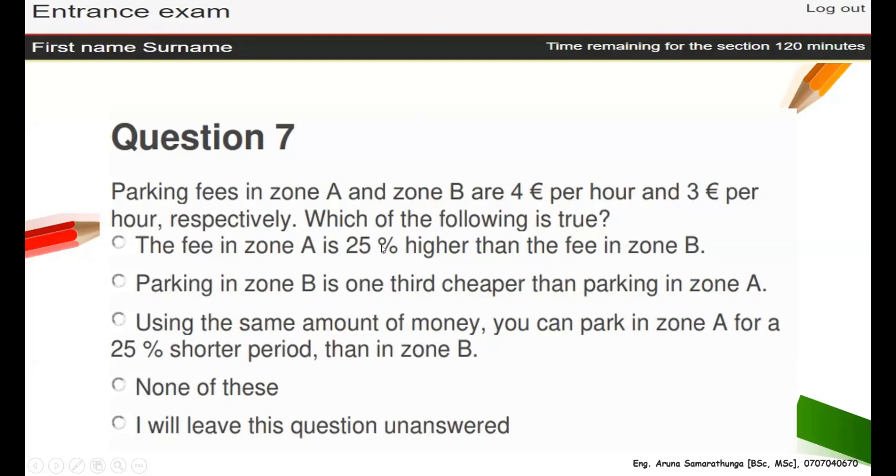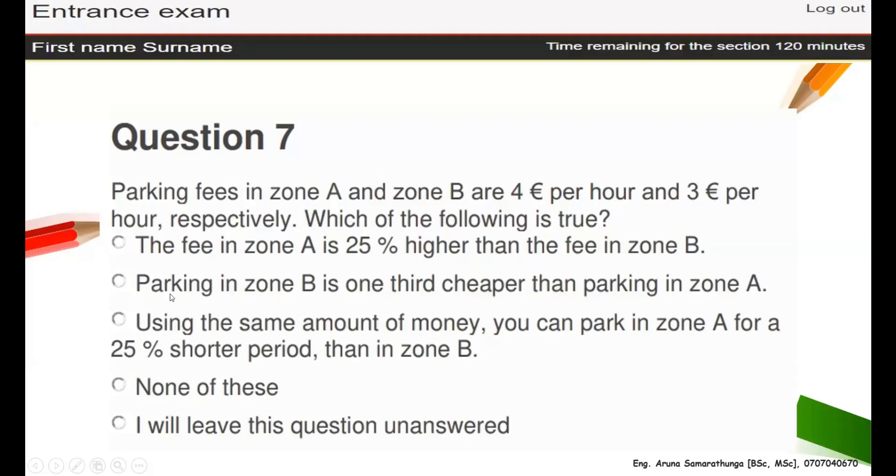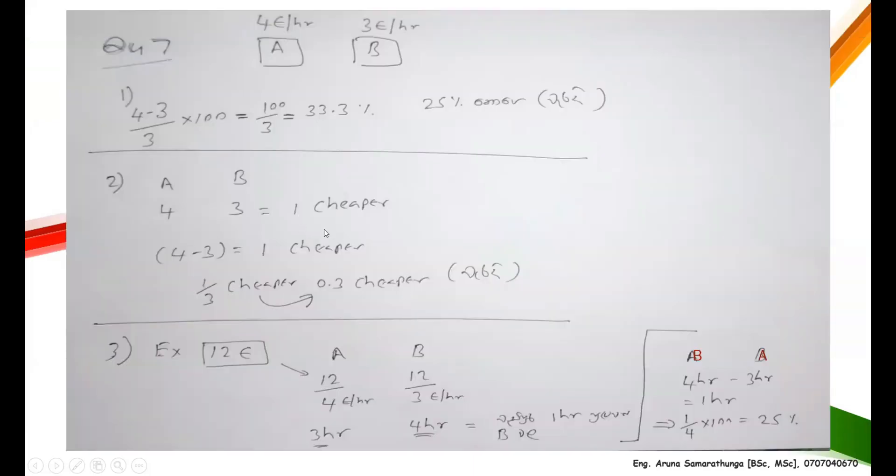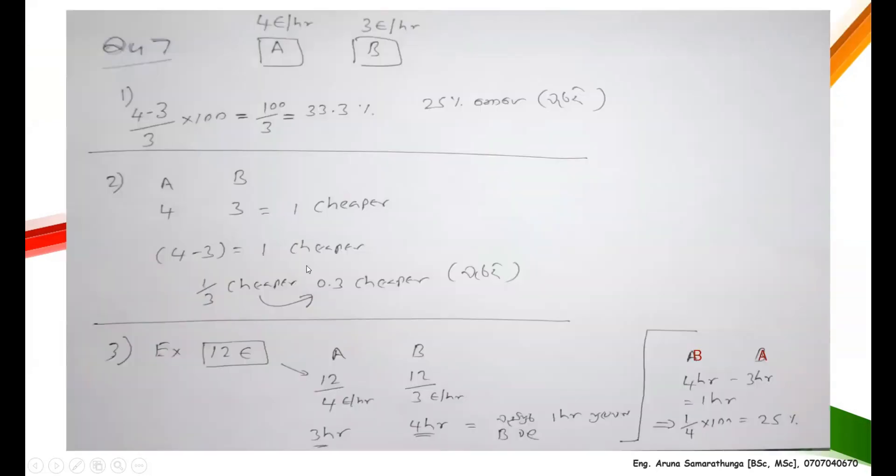Let's take the second one. The parking rate is 4 here and parking rate is 3 here, so it's one euro cheaper. They told here parking in B is one-third cheaper - not one-third, it's one euro cheaper. So it's wrong.